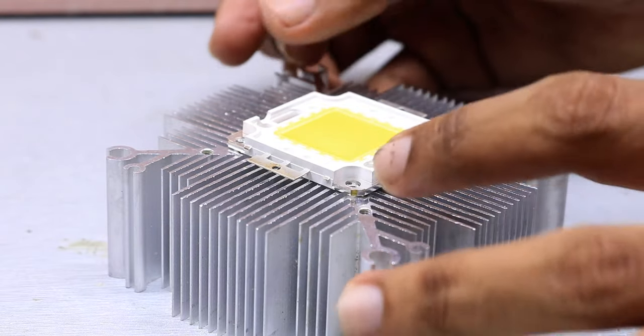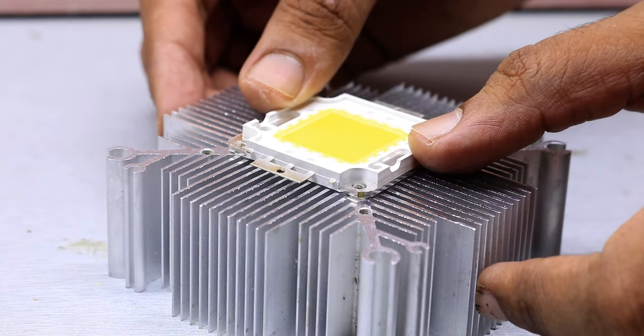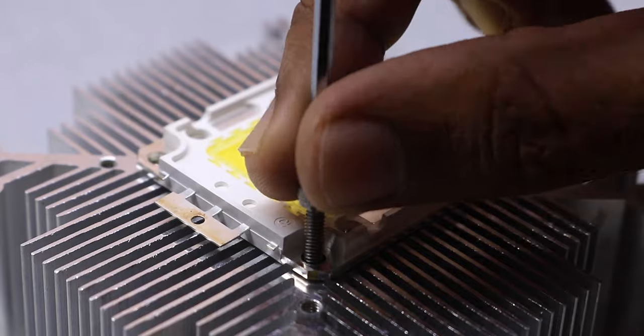Once that was done, just firmly press the LED on the thermal compound. And then use 10mm long M3 bolts for mounting the LED onto the heat sink.